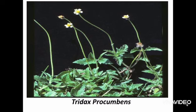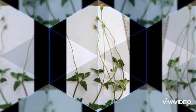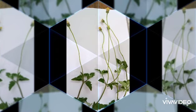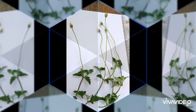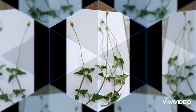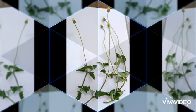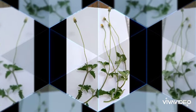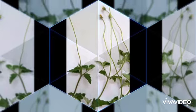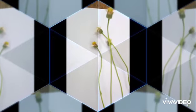Let us start taking freehand sections of dicot stem. For that I am using the Tridax plant stem. Tridax Procumbens is a wild growing ephemeral mesophytic prostrate herb belonging to the Asteraceae family, which is a good example of dicot stem.